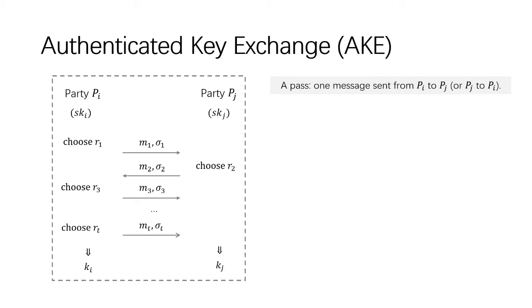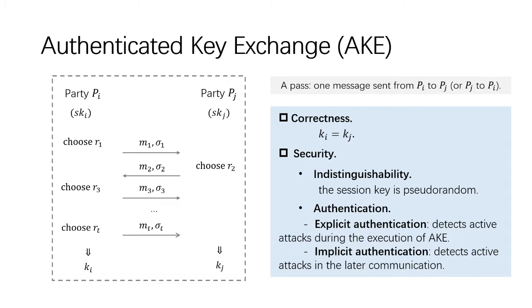Here we call one message sent from one to the other a pass. AKE is required to have correctness and security. Correctness guarantees that Pi and Pj share the same session key after a complete execution, namely Ki equals Kj. Security involves indistinguishability and authentication. Indistinguishability requires that the session key is pseudorandom. Authentication can be categorized into two types: explicit authentication and implicit authentication. We mainly focus on explicit authentication in this paper, which asks the AKE protocol to detect active attacks during the execution.